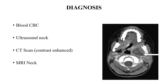For diagnosis, as this is an acute infected state, a blood CBC may show neutrophilia and raised WBCs. Ultrasound of the neck may reveal the size of the abscess cavity. CT scan, especially contrast-enhanced CT, and MRI can be used. The CT scan image shows the abscess as a dark area.